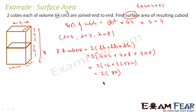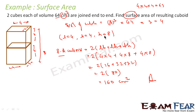The answer is 160 cm². Note that the unit is cm² — centimeter square — because we are finding surface area, not volume. If we were finding volume, the unit would be cm³. To summarize: we joined two cubes to form a cuboid, found its length, breadth, and height, then applied the surface area formula and solved.